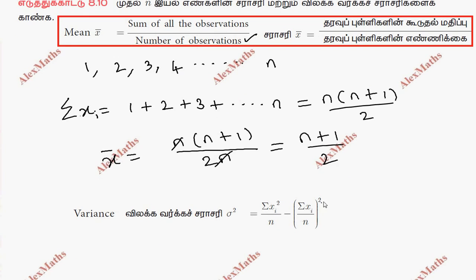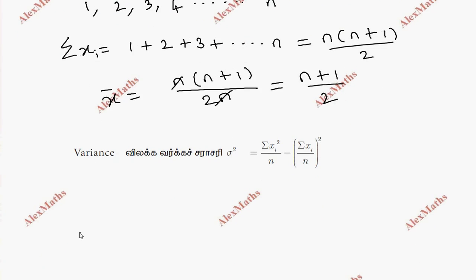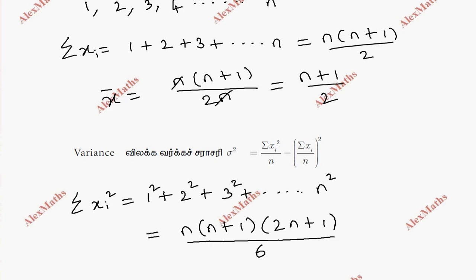Sigma xi square is 1 square plus 2 square plus 3 square plus dot dot dot n square. Here, this formula is n into n plus 1 into 2n plus 1 by 6.